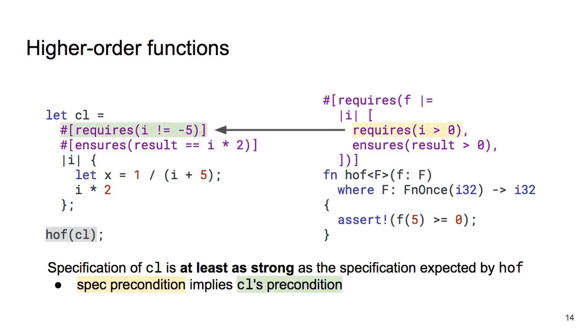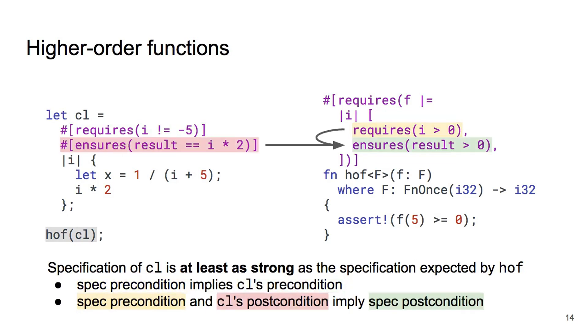We know the call is valid if the specification of the closure is at least as strong as the specification expected by HOF. This is true if two conditions are satisfied. Firstly, that the precondition expected by HOF implies the precondition of the closure. This is true as i being positive does mean it cannot be negative 5. Secondly, that the precondition expected by HOF together with the postcondition of the closure imply the postcondition expected by HOF. Once again, this is true as the double of a positive number is also positive. We have verified both of the conditions, so we know the call to HOF can be made. You may also know the conditions we imposed as behavioral subtyping.